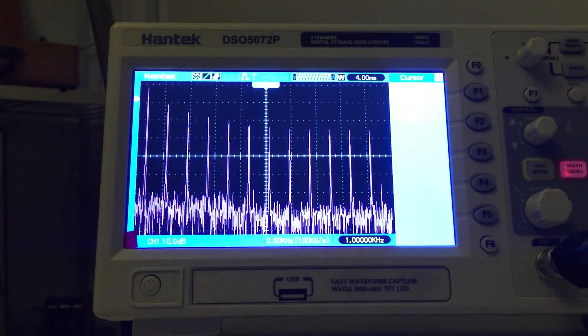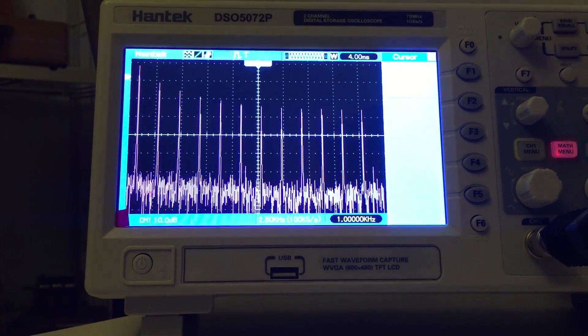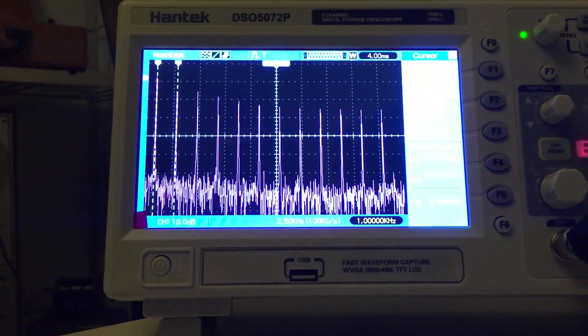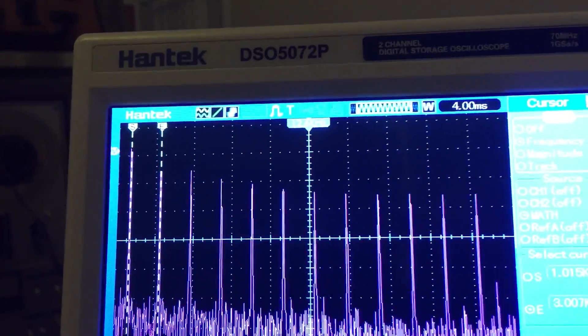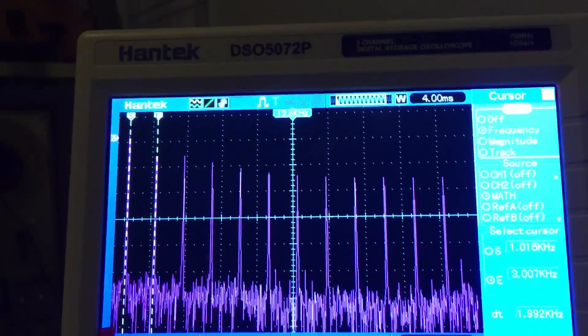And there you have a square wave. And if I turn on my cursors for frequency, you can see I already got it into position. I'm looking at, on the left side, the S is the fundamental and the E is the third harmonic.